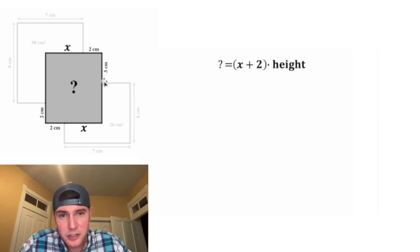Now we can change the base into x plus 2. Now for the height, we know this part is 3, and for the unknown part, let's call it z. And since this is 3 and this is only 2, we need to make this z plus 1, so that both heights are equal to z plus 3.